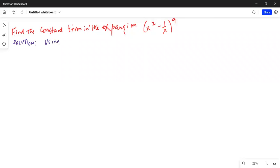Using binomial theorem. The term containing x^r in the expansion of (x + y)^n is nCr · x^r · y^(n-r).